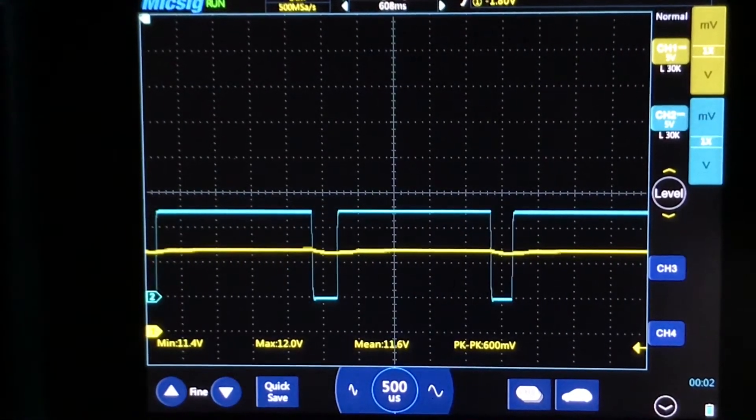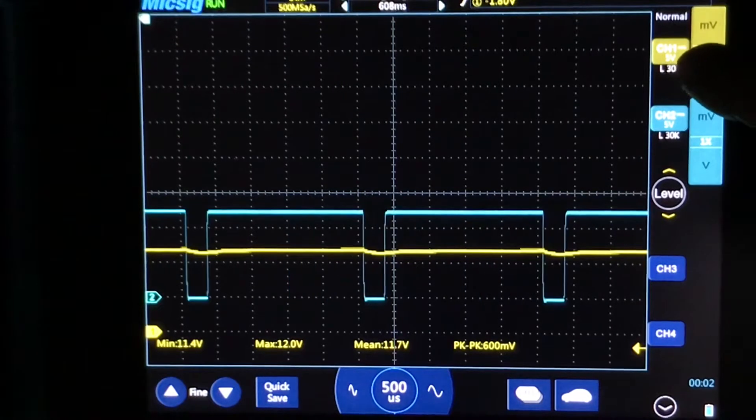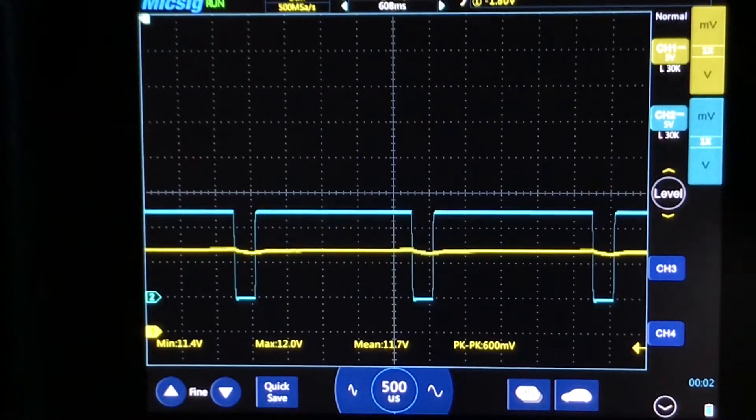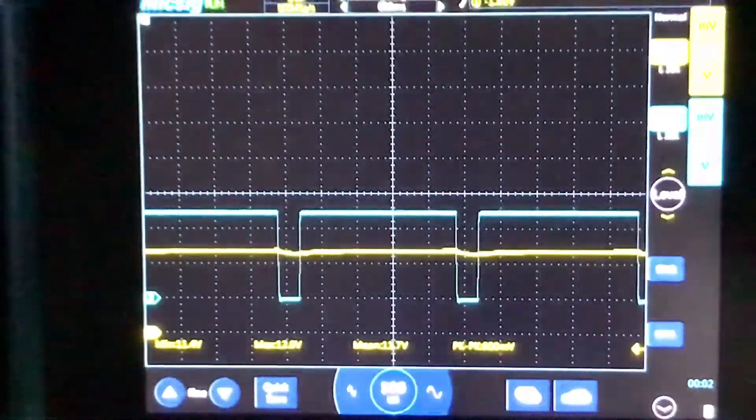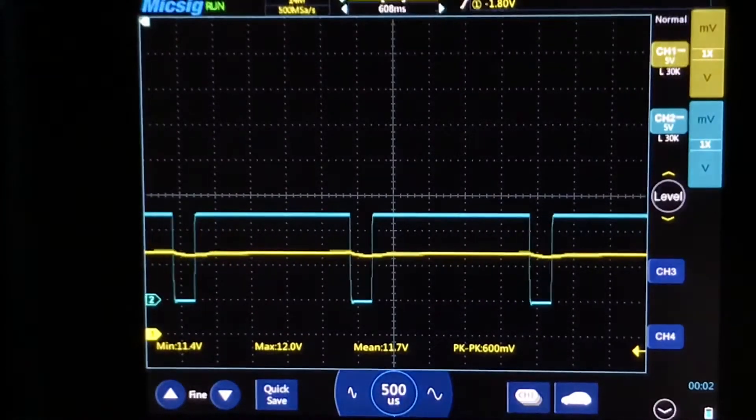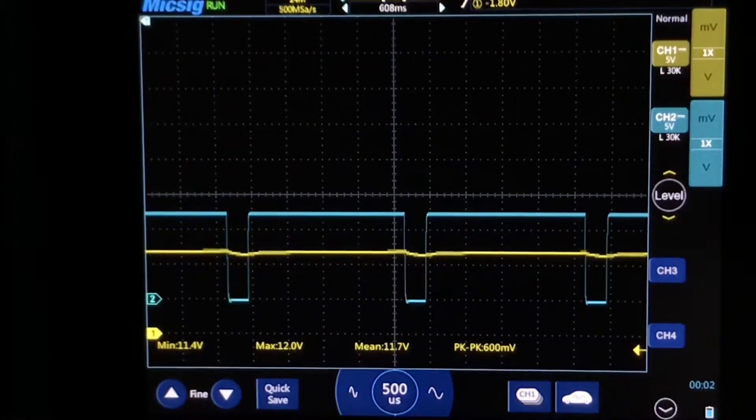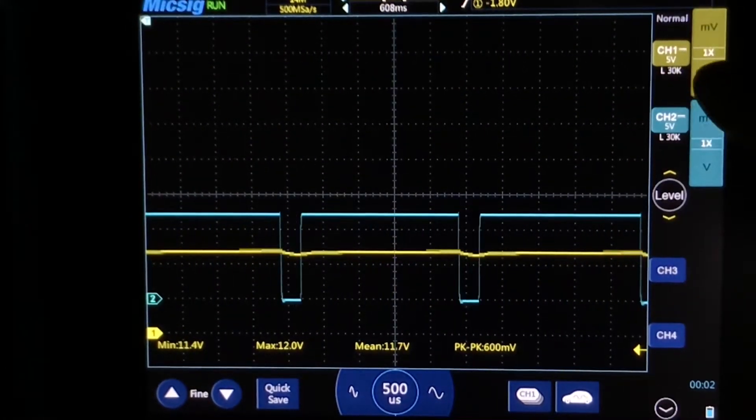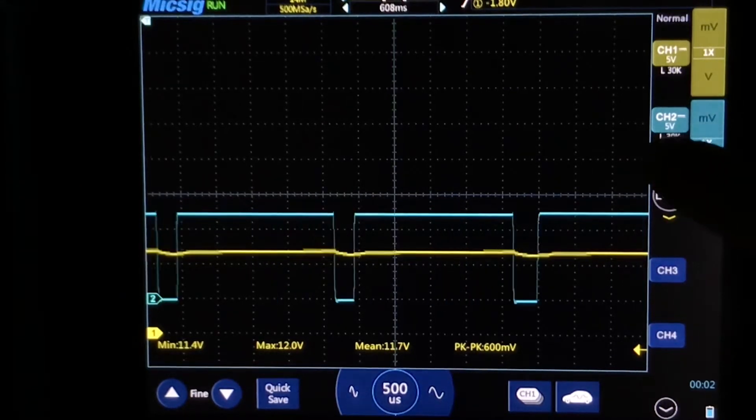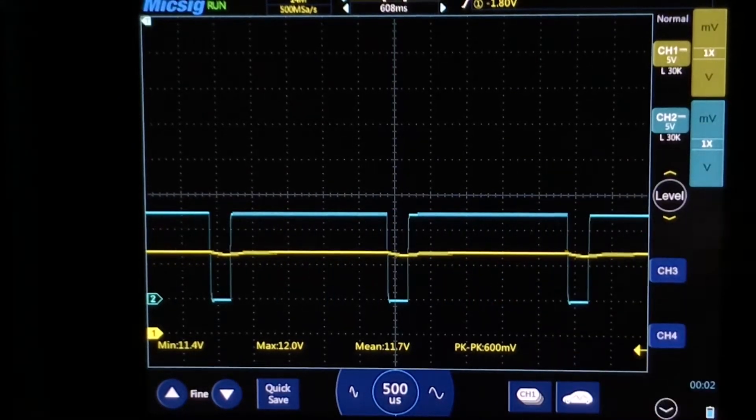There we go, much better. 5 volts on channel 1 per division, 5 volts for channel 2, 5 volts per division, 500 microseconds per division on our time base.